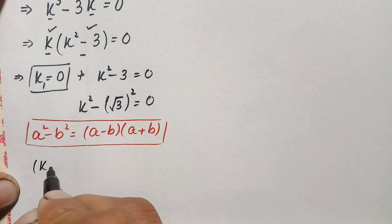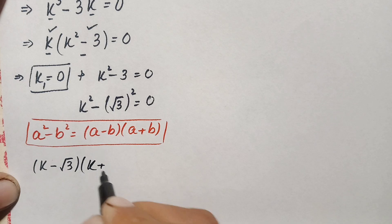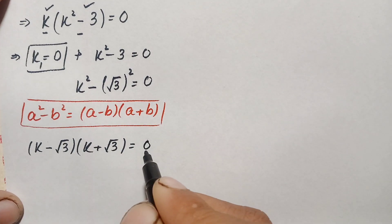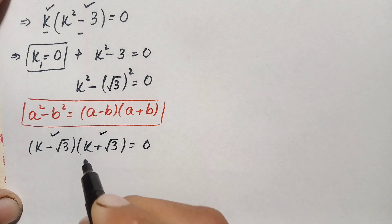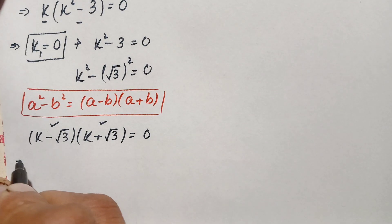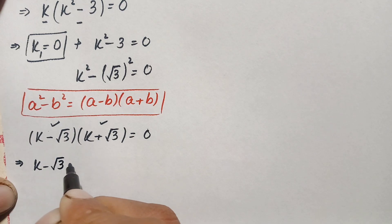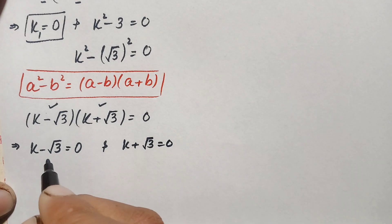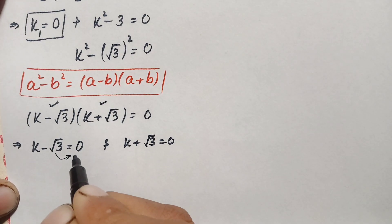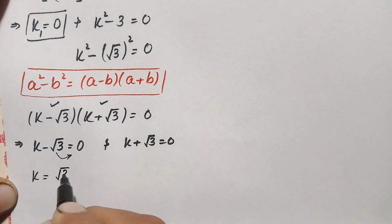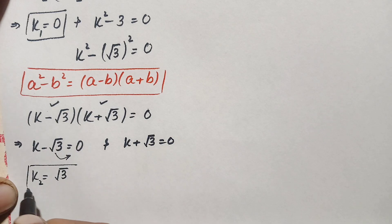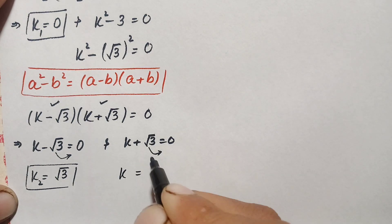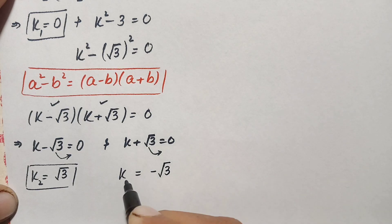Using the difference of squares identity, this becomes (k minus √3)(k plus √3) equals zero. Since the product of these two linear expressions is zero, either k minus √3 equals zero or k plus √3 equals zero. From the first: k equals positive √3, which is our second solution. From the second: k equals negative √3, which is our third solution.